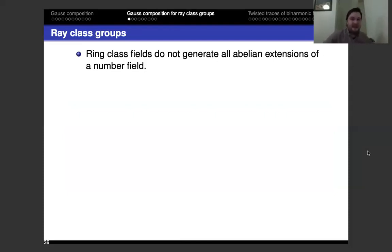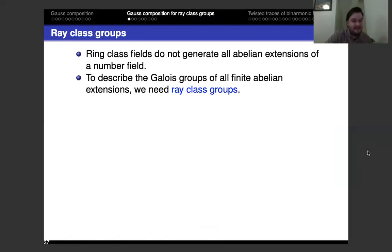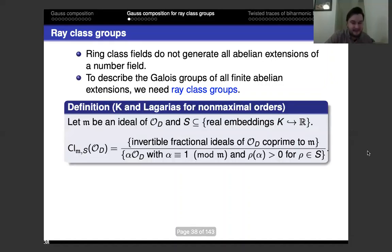Now I'll get into ray class groups. Ring class groups were nice — why do we need ray class groups? Ring class fields don't generate all the abelian extensions of a number field. The other stuff are ray class fields associated to ray class groups. This is almost the usual definition of a ray class group, with a small extension to allow for non-principal orders.